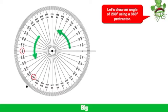Then you are looking for the value that you are trying to draw an angle for. So in this case it's 230 degrees. It's on the inside of this protractor here, you can see.